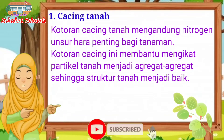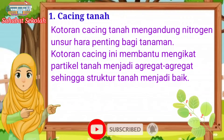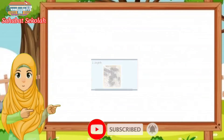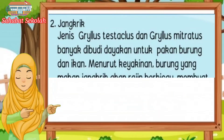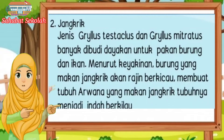Cacing tanah juga berfungsi untuk menyuburkan tanah. Lalu jangkrik — pasti kalian tahu jangkrik. Jenis Gryllus testaceus dan Gryllus mitratus banyak dibudidayakan untuk pakan burung dan ikan. Menurut keyakinan, burung yang memakan jangkrik akan rajin berkicau, dan ikan arwana yang makan jangkrik tubuhnya menjadi indah berkilau.